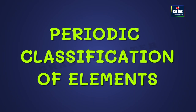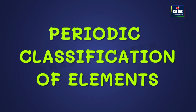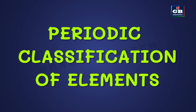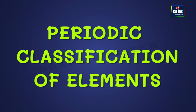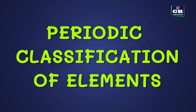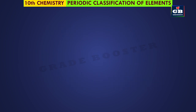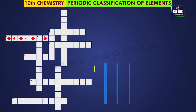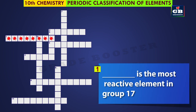Hello students, welcome to Grade Booster. In this video we are going to solve a crossword puzzle from the chapter periodic classification of elements. Let us begin with the first one — one across: dash is the most reactive element in the group 17.